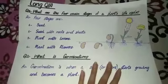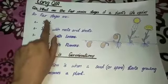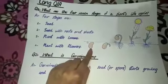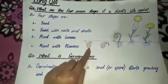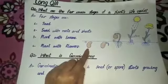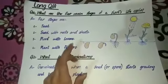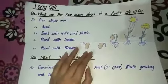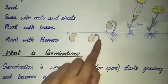اس کے پورے life cycle کو four stages میں divide کیا گیا ہے۔ The first stage is seed۔ جب ہم seed کو moist soil میں plant کر دیتے ہیں اور اس کو required quantity میں food, water اور basic nutrients جیسے minerals اور vitamins ملتے رہتے ہیں تو اس کی چھوٹی سی shoot بننا شروع ہو جاتی ہے۔